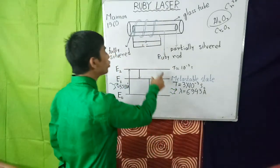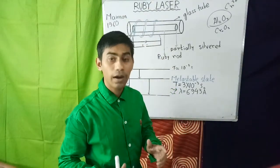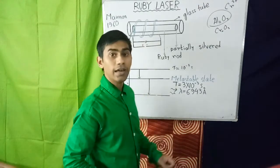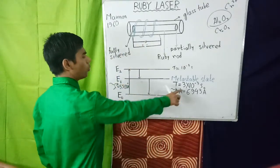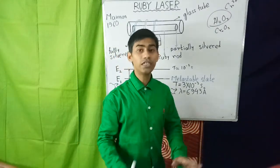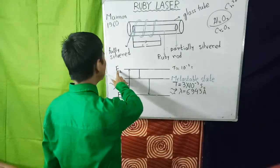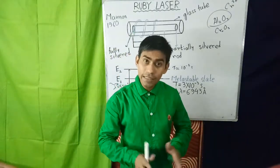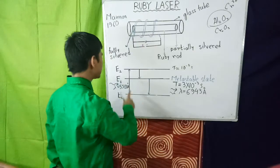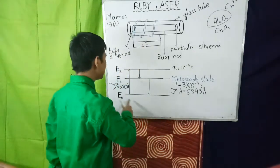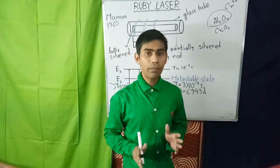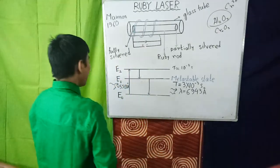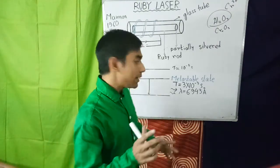Since E2 has a mean life of only 10⁻⁸ seconds, atoms do not stay there for long. After a short period, they fall into the metastable state E1. Since E1 has a mean life of 10⁻³ seconds, which is much longer than the mean life of E2, the number of atoms in state E1 keeps increasing, and ultimately becomes greater than the number of atoms in the ground state E0. Thus, population inversion is achieved between E1 and E0.